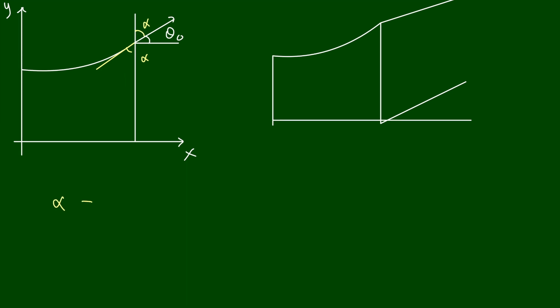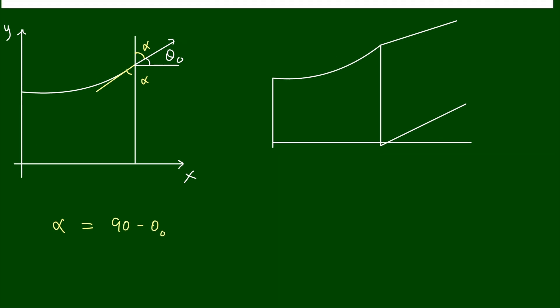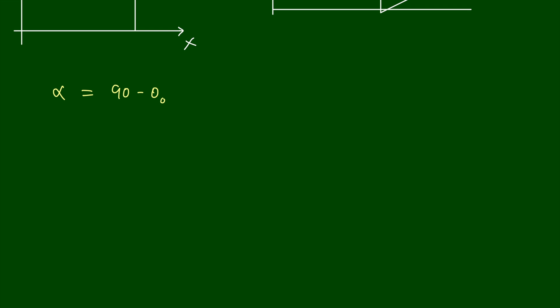So α is equal to, we can say α equal to 90 minus θ₀. And force due to surface tension will be along this direction. It has one component vertically up called Fs cos α, or we can say Fs cos α is equal to Fs cos(90 - θ₀), or we can say Fs sin θ₀.